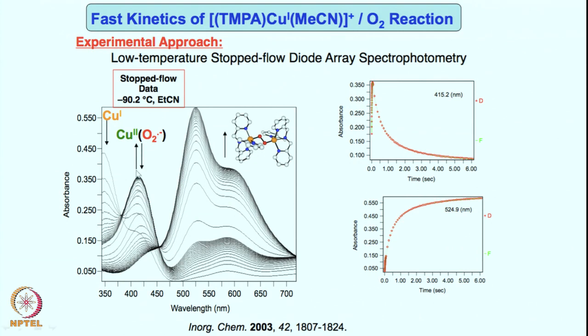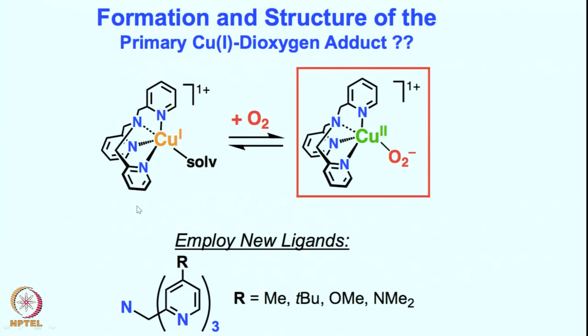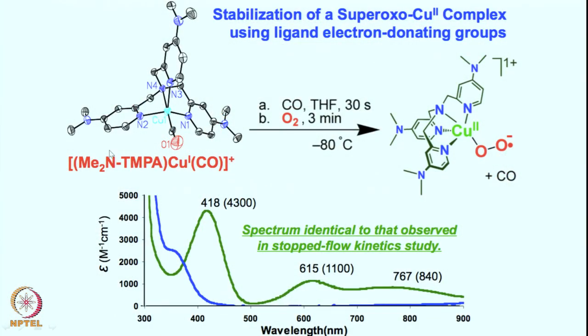An intermediate appears in the stopped-flow data, but whether it is truly a copper superoxo intermediate was not initially known. What was required was an extensive study involving suitable ligand design, temperature, solvent, and optimization of different reaction conditions — as well as understanding what goes on behind the scenes when nothing can be seen. After subsequent studies, it was found that with a suitable ligand (a derivative of the previous one), one can stabilize the copper superoxo intermediate somewhat at very low temperature, showing a spectrum at 420–410 nm, exactly matching what was found in stopped-flow kinetics for another ligand.